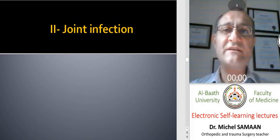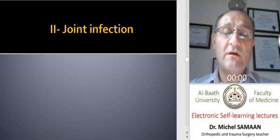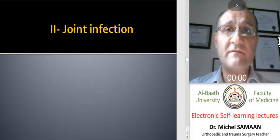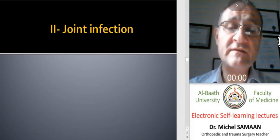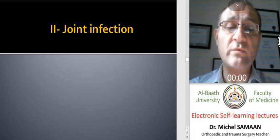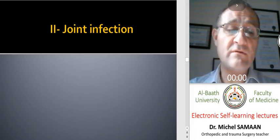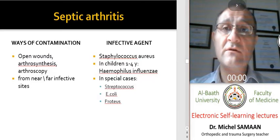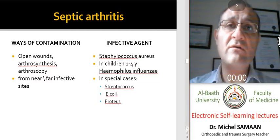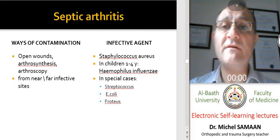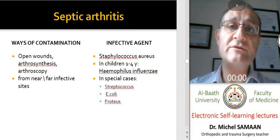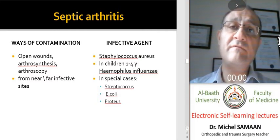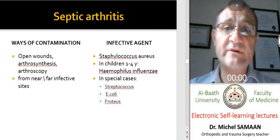The second most important infection is joint infection. In this situation, there is some risk that may affect joint viability, joint mobility, and joint function in the future if not treated well, and this is a little bit different from osteomyelitis. Joint infection usually spreads the same way as in other infections — by direct contamination through wounds, surgery, a nearby infection, or indirect infection as in hematogenous osteomyelitis.